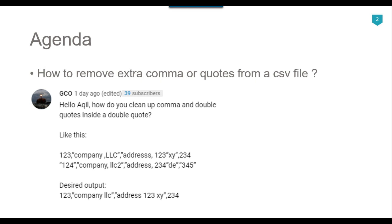Recently I got a question from one of my subscribers GCO, and the question was that there are some commas in this CSV file, so how we can remove them. For example, if you look at the first line: 123, company, LLC — this is the original data and this is the desired output. After 'company' and before 'LLC' there is a comma, and this particular column is enclosed within double quotes, but there is a comma here.